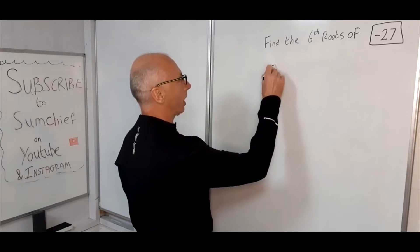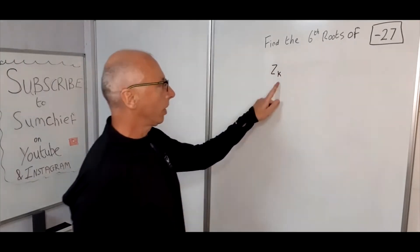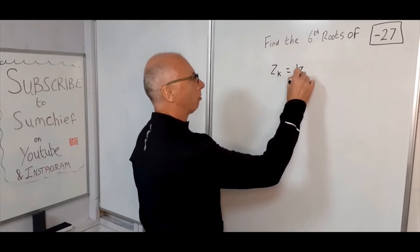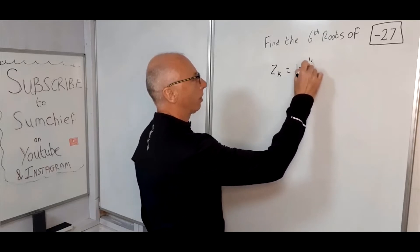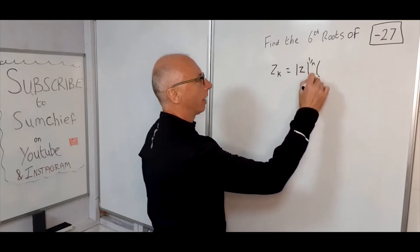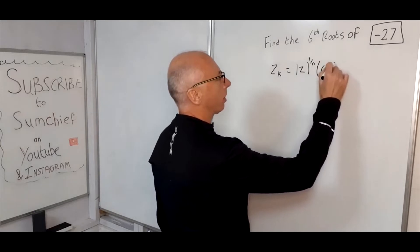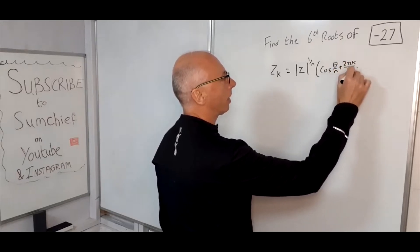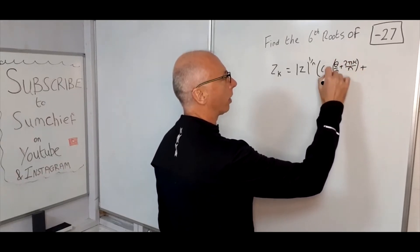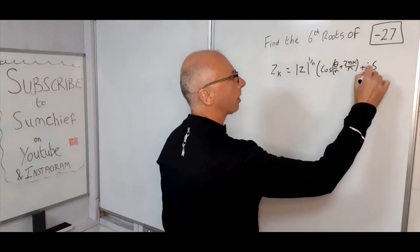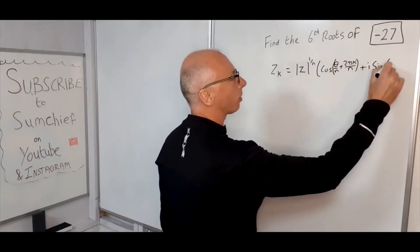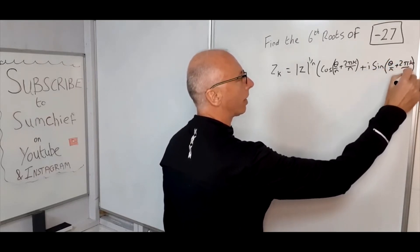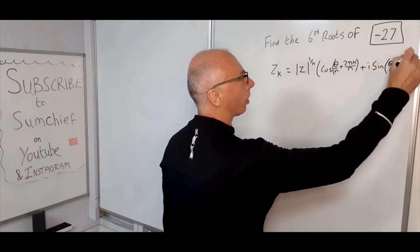So for minus 27, Z_K — that's for each root, so K = 0, 1, 2, 3, 4, 5 — equals the modulus of Z to the 1 over N, times cosine of (theta over N plus 2 pi K over N), plus i sine of (theta over N plus 2 pi K over N), and that whole thing is also to the 1 over N.